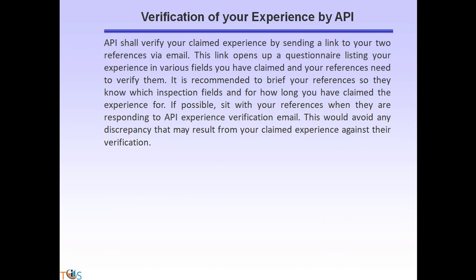Verification of your experience by API is done by sending a link to your two references via email. The link opens a questionnaire listing your claimed experience in various fields. It is recommended to brief your references so they know which inspection fields you have claimed and for how long. If possible, sit with your references when they respond to the API experience verification email to avoid any discrepancy.